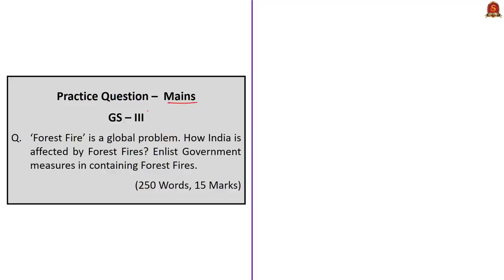Now let's take up one practice mains question relevant to GS Paper 3: 'Forest fire is a global problem. How is India affected by forest fires? Discuss government measures in containing forest fires.' This is a 15-mark question to be written in 250 words. We request you to post your written answers in the comment section, and your posted answers will be evaluated with suitable feedback given within a reasonable timeframe.